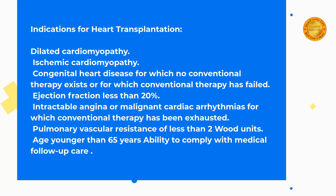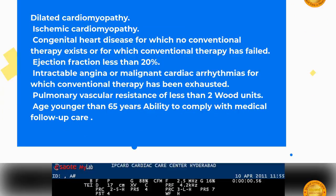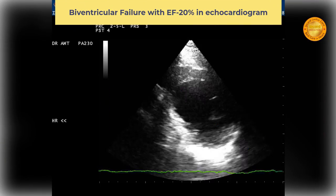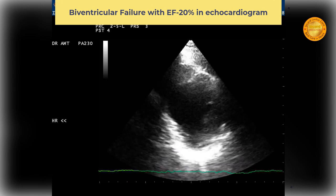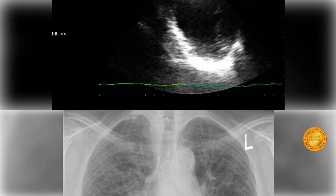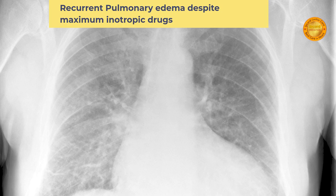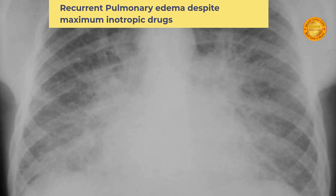Further indications include pulmonary vascular resistance of less than 2 units, age younger than 65 years, ability to comply with medical follow-up care, biventricular failure with EF less than 20% on echocardiogram, and recurrent pulmonary edema despite maximum inotropic drugs.